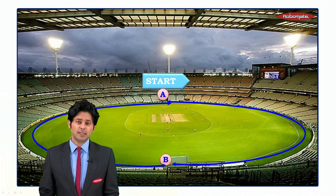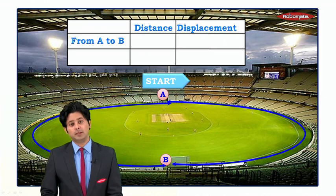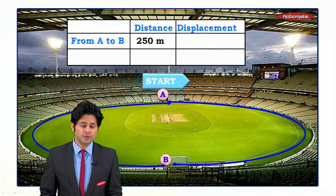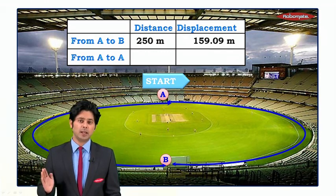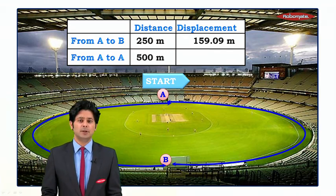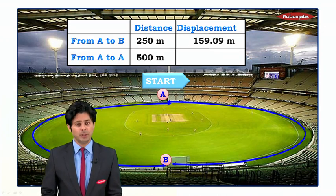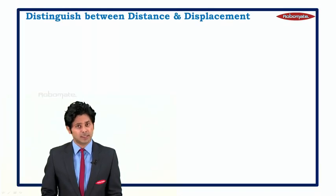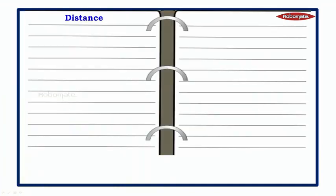Considering the entire data: when the athlete moves from point A to B, the distance is 250 meters while the displacement is 159.09 meters. When he moves from point A and comes back to the same point, the distance is 500 meters and — since initial and final points are the same — the displacement is zero meters.